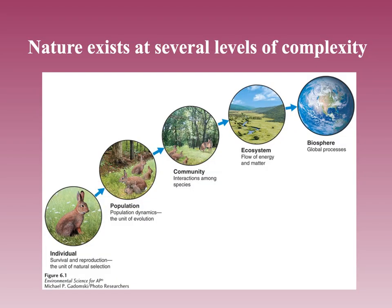Nature exists at several levels of complexity. We're going to look at individual, population, community, ecosystem, and biosphere. At the individual level, you're looking at a specific species. Population is looking at population dynamics — the unit of evolution, usually just one species in that area. Community is all of the species in the area together and how they are working together or at odds with one another. At the ecosystem level, it's all the biotic and abiotic components of a region and how they interact. The biosphere is total Earth, everything together. Scientists usually study communities mostly, and a lot of times these communities are named for the dominant species in the area.